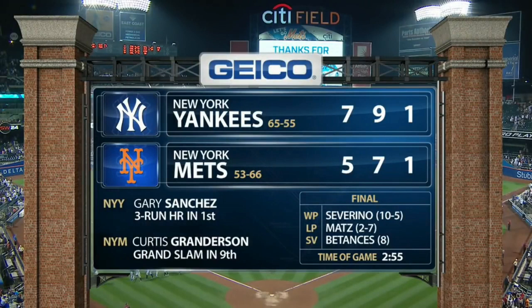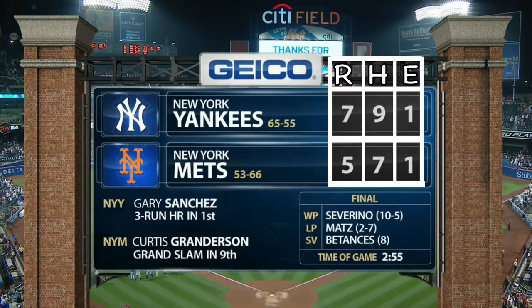Here is the final scorebox — the Yankees have won 7 to 5. Sometimes the scorebox is expressed in RHE: R for runs (a complete turn of bases), H for hits (the number of hits that allowed hitters to reach first base), and E for errors — for example, when a player of the defensive team plays so badly that offensive team players have time to advance on the bases, it's considered a mistake.